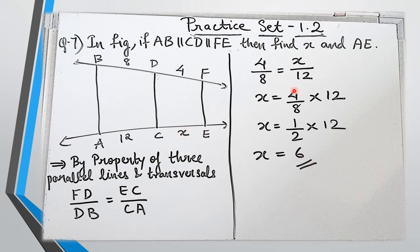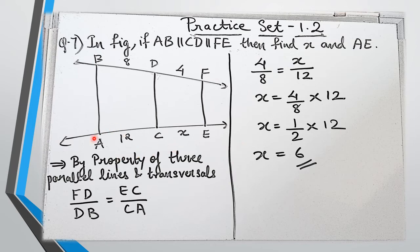Now one more thing to find is AE. AE equals AC plus CE, that is 12 plus X, which equals 12 plus 6, that is 18. So AE is 18. That part you can fill in — it's the simple part. AE is just adding AC plus CE.